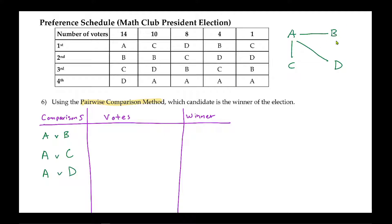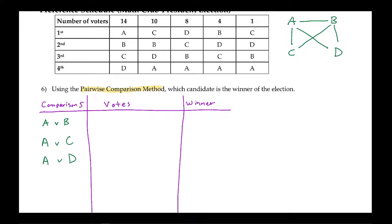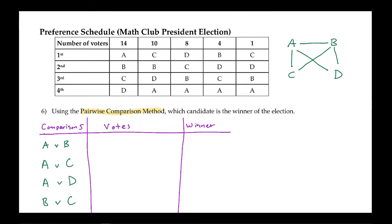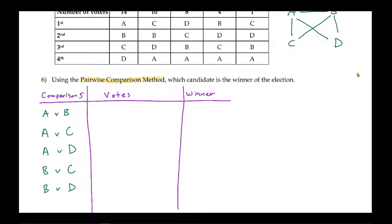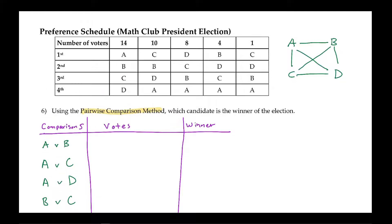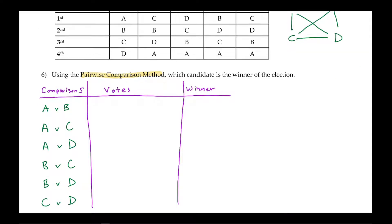Now let's look at Bob. We already made the comparison between Anna and Bob, so we don't need to do that anymore. We can then do Bob to Cora, and then Bob to Dan — so B versus C, and B versus D. For Cora, we already made the comparisons A and C, and B and C, so the only one we need to do is C versus D. That covers everything, because Dan has already been compared to all three other candidates.